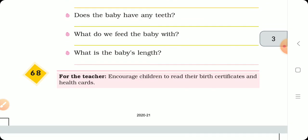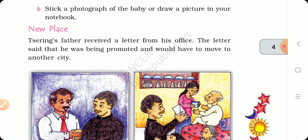This question will also be in the workbook. Now look at the new place. Tree String's father received a letter from his office. The letter said that he was being promoted and would have to move to another city.